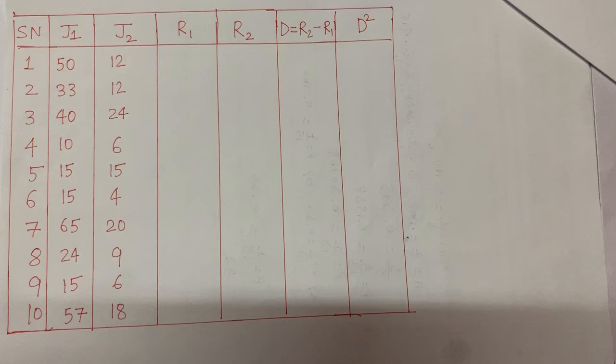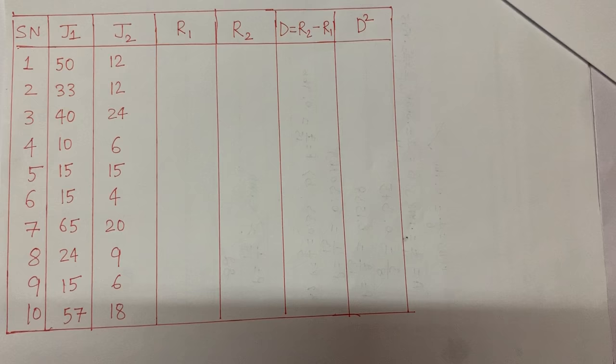My job here is to find how alike these two judges think — what is the correlation between them. Since this is a problem of opinion and converting an attribute into a numerical value, the most suitable method is Spearman's rank correlation coefficient, not Karl Pearson's coefficient of correlation.